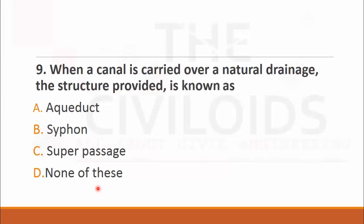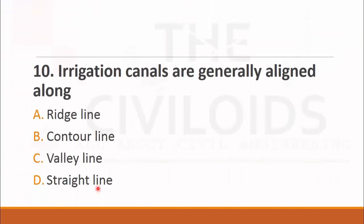MCQ number ten, also from irrigation engineering: Irrigation canals are generally aligned along. The choices are: A. ridge line, B. contour line, C. valley line, D. straight line. The most economical canal is the ridge line, so the right choice is A. ridge line.